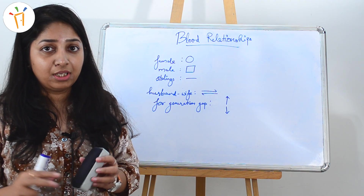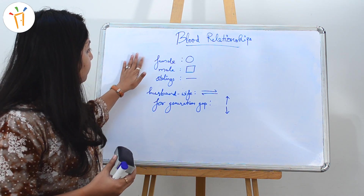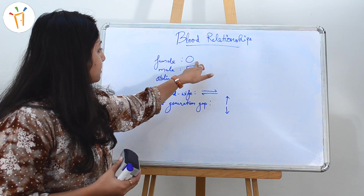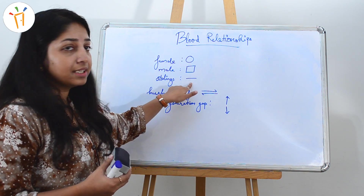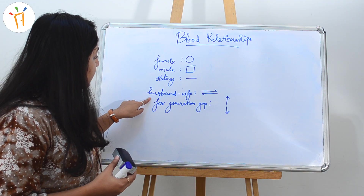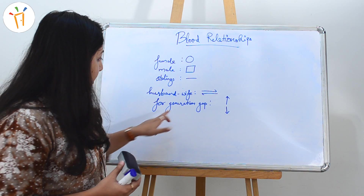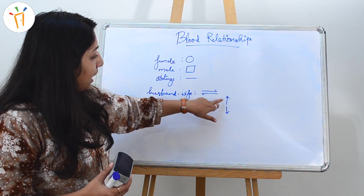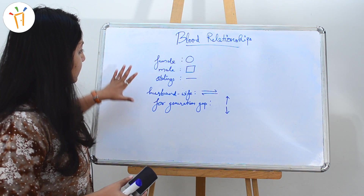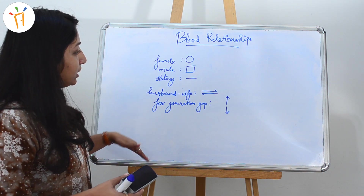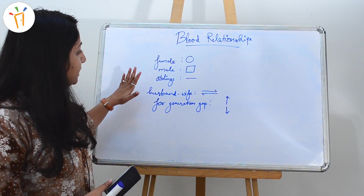The symbols are: for female we would be using a circle, for male we would be using a square, for siblings a single line, for husband and wife or spouse we would be using a bi-directional line, and for generation gap an up arrow and down arrow. These symbols are not mandatory — you can even use symbols of your own. These symbols will make the questions easy.